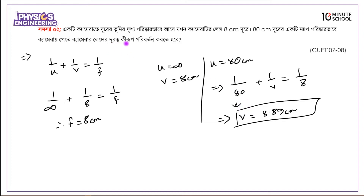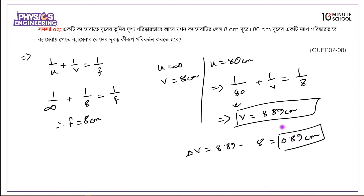The camera lens has moved. Delta v equals 8.89 minus 8, which equals 0.89 centimeters. So the lens needs to move 0.89 centimeters. The object was at 80 centimeters — that's the solution for this part.